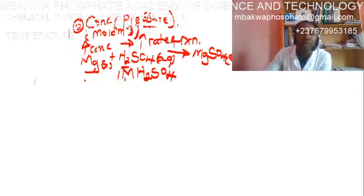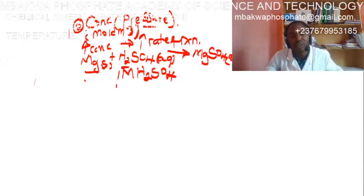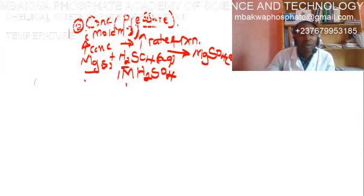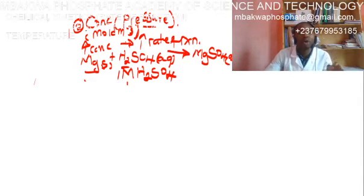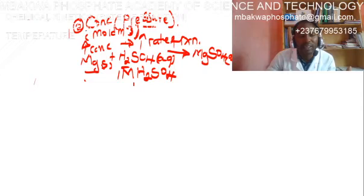If we use one molar sulfuric acid, the concentration here is one molar. Molarity — as explained in a previous video on concentration and molarity — when measured in moles per dm³ equals molar concentration, which equals molarity. So if I use one molar sulfuric acid, the rate of reaction will be slower than when I use two molar sulfuric acid.